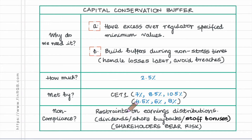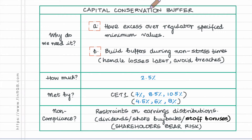That means there will be restraints imposed on dividend payouts, on share buybacks, and even on the discretionary bonuses paid to staff. These restraints will persist until enough capital is conserved to bring the core equity tier one ratio up and above seven percent — the minimum.